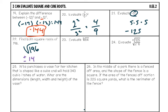Number twenty-three: evaluate the cube root of 64 — what times itself three times gives 64? Four times four times four is 64, so the cube root of 64 is four. Number twenty-four is a fraction: find the cube root of each part. The cube root of 125 is five, and the cube root of 216 is six — since six times six times six gives 216. When it's a fraction, just break it apart: the answer is five sixths.